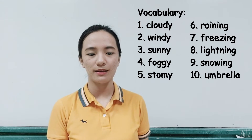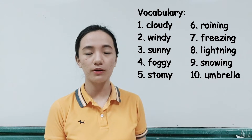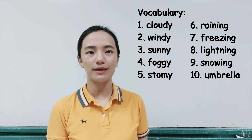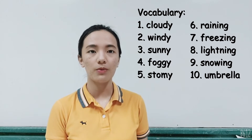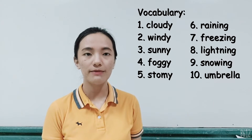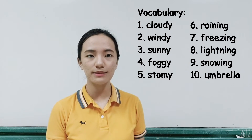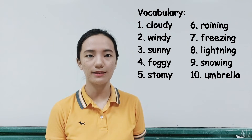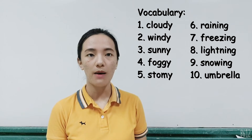Three, sunny; four, foggy; five, stormy; six, raining; seven, freezing; eight, lightning; nine, snowing; ten, umbrella. Now let's move on.